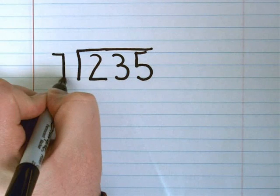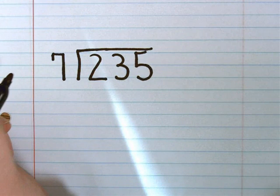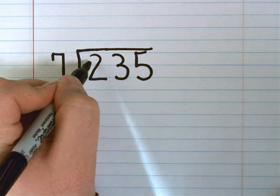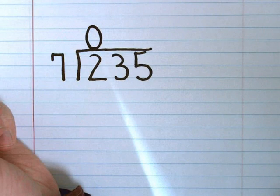You always start by looking at the first digit in your dividend, which in this case is 2. If I only have 2, I can make 0 groups of 7, so I have to move on and look at the next digit, which would make it 23.